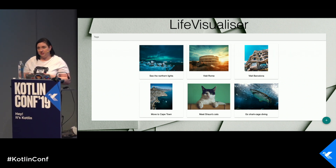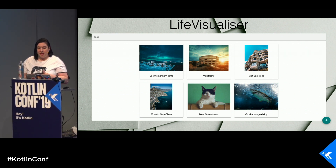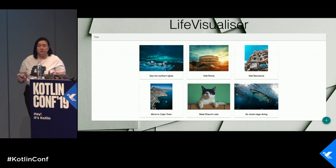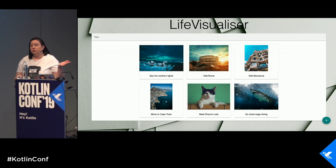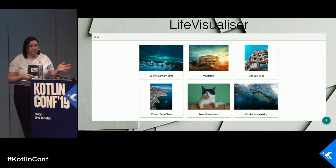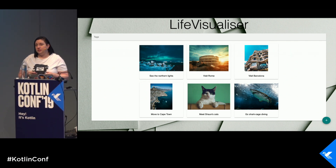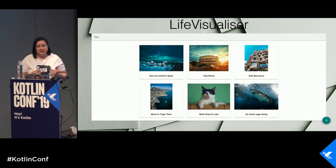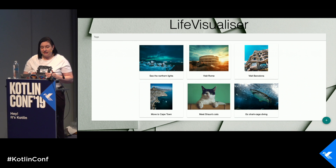You can see it in the middle at the bottom. My next inspiration was to see the Northern Lights. I select the picture, add some tags to it, and then create that inspiration and do some filtering on it. This is what a completed Life Visualiser will look like. I want to see the Northern Lights, visit Rome and Barcelona, move to Cape Town, meet my boyfriend Sean's cat, and go shark cage diving — because that's a thing people do in Cape Town.